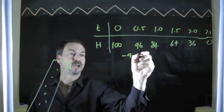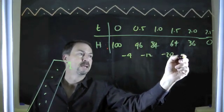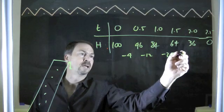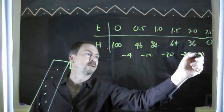96 down to 84 is a change of negative 12, negative 20, negative 28, and negative 36. There we go.